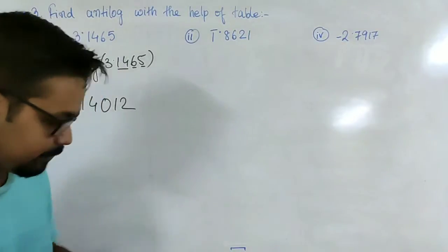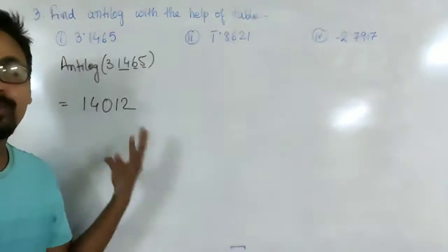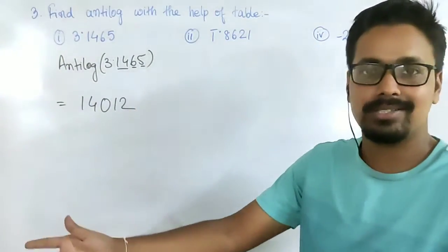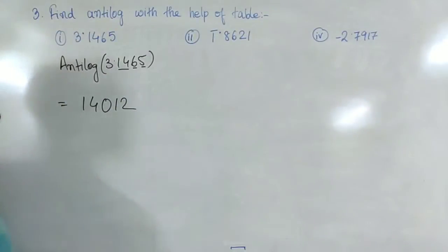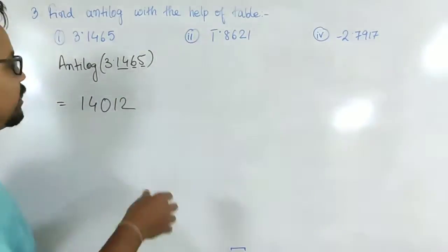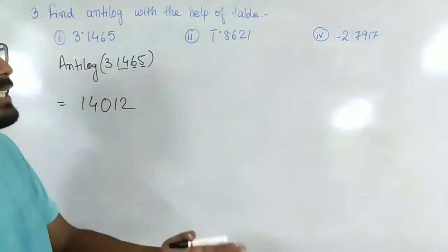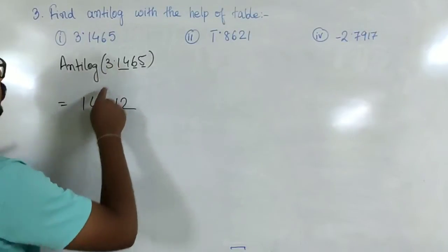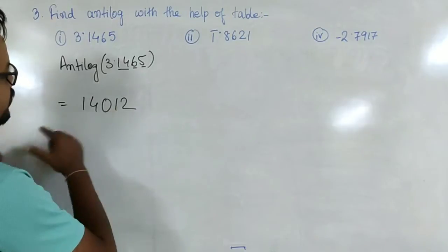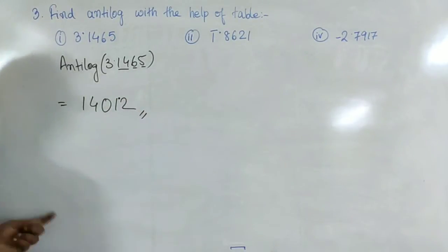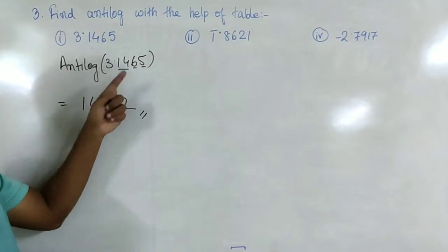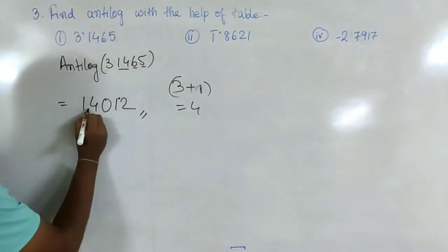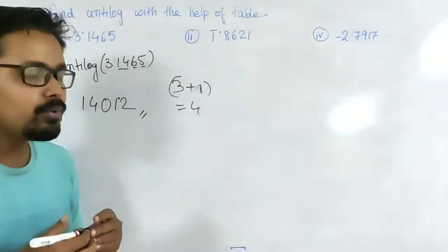Now we place the decimal point. The formula is: if the characteristic is n, place the decimal point after n plus 1 digits. Here the characteristic is 3, so n plus 1 equals 4. We place the decimal point after 4 digits in 14012, giving 1401.2. That is the answer for the antilog of 3.1465.